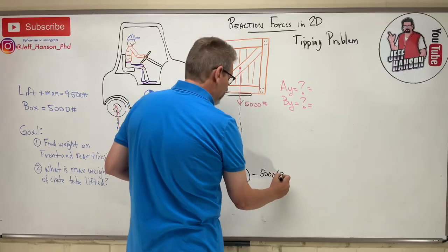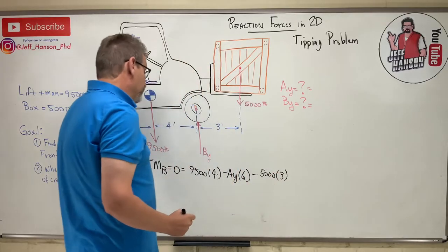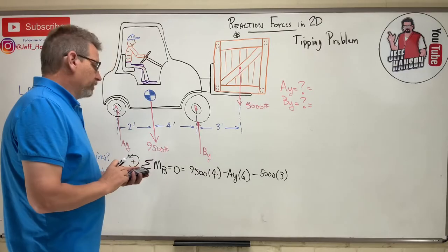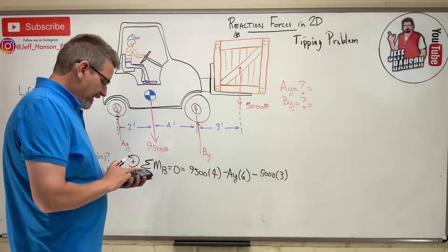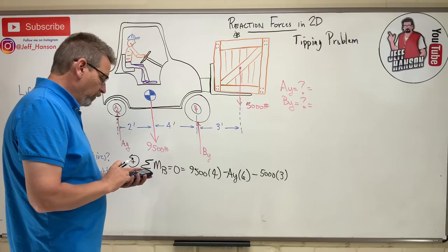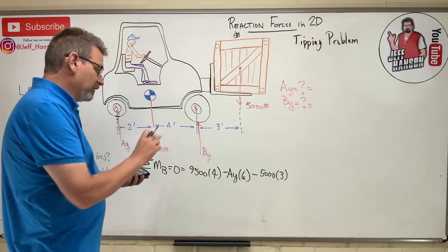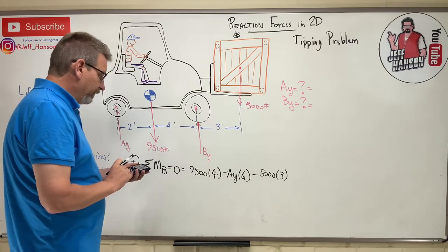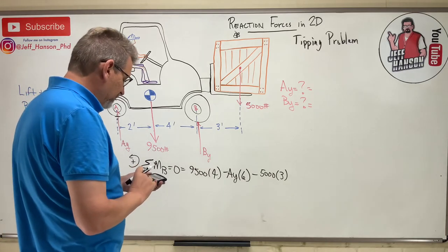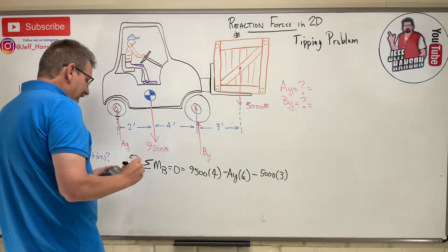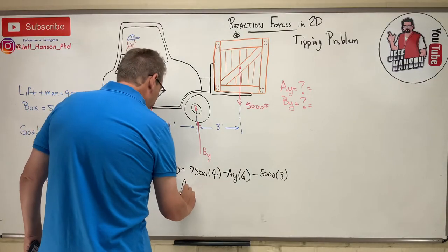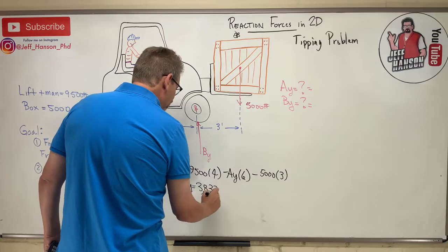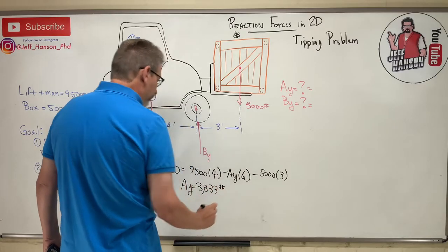And then I have the 5,000 which rotates me, oh that's negative also, minus 5,000 times 3 away. Okay, so from that what do we get? All right, let's see what we get. So 9,500 times 4 equals minus what? 15,000 equals 23,000 and that divided by 6, 3833. So Ay equals 3833. Okay, 3,833 pounds.